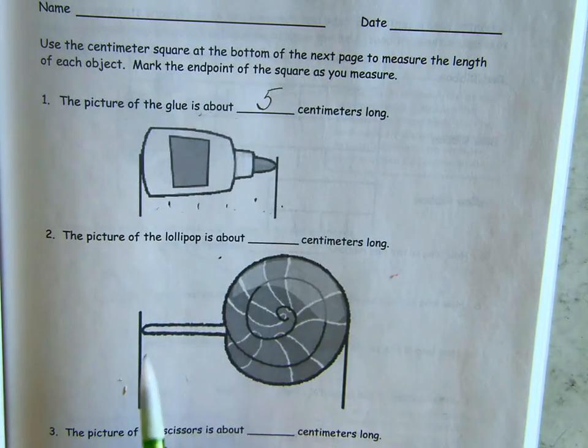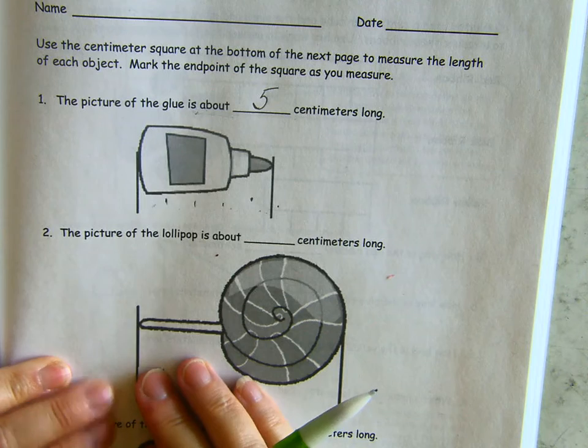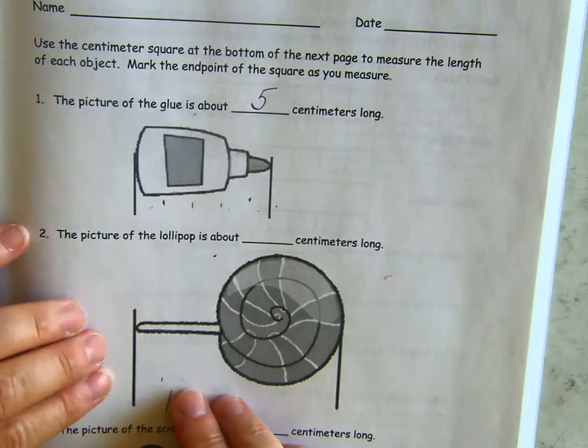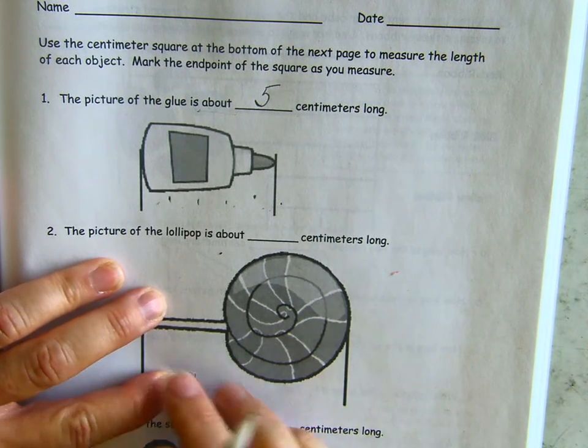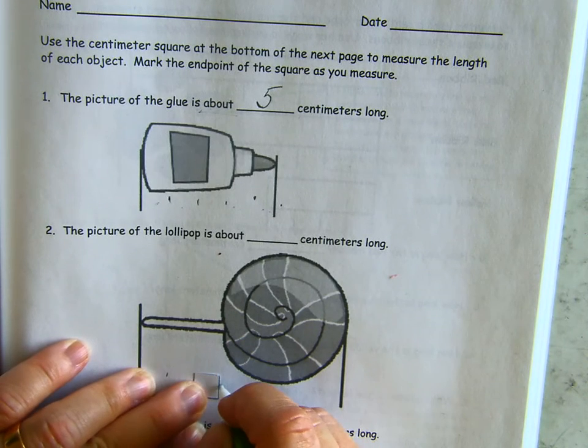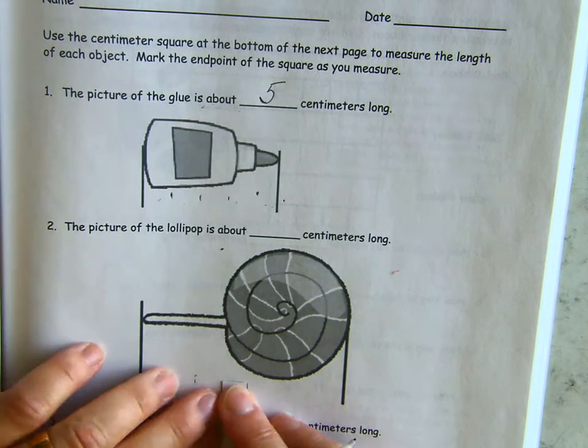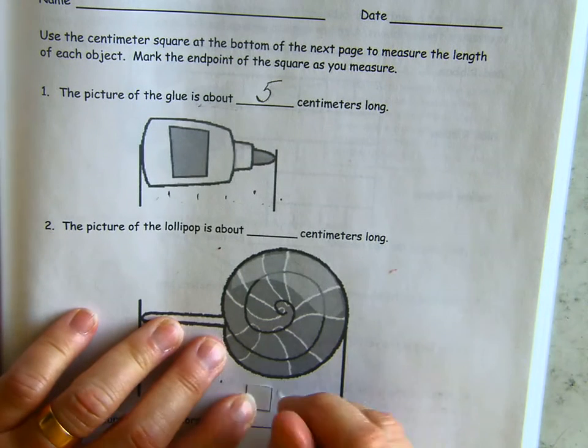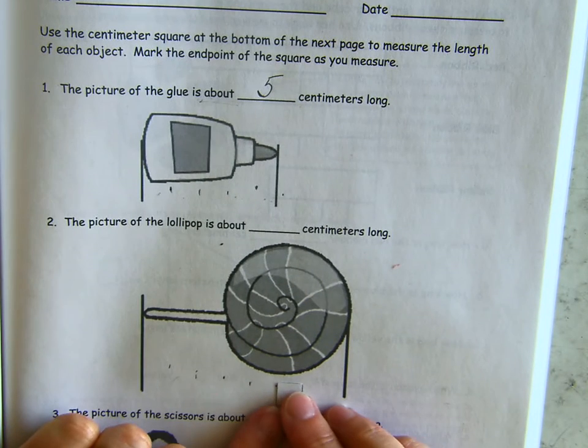Let's look at the lollipop. Same thing. I'm going to start my centimeter cube right there on that end mark and make my mark at the end. Moving it, and just covering up the mark, and making a new one. Just covering up that mark, make a new one. Every time, just cover that mark so that we're not making it a little bit longer every time. We want to make sure that we're precise. That means as close to exact as we can be.